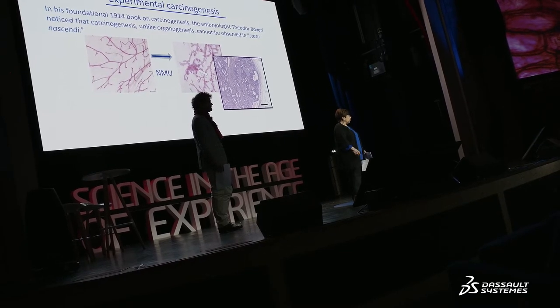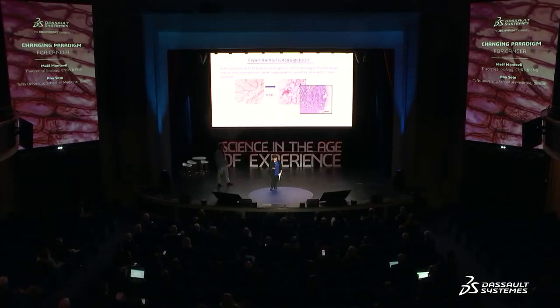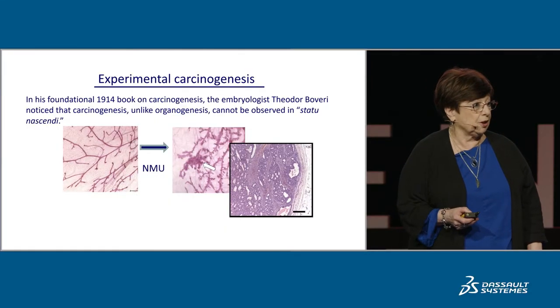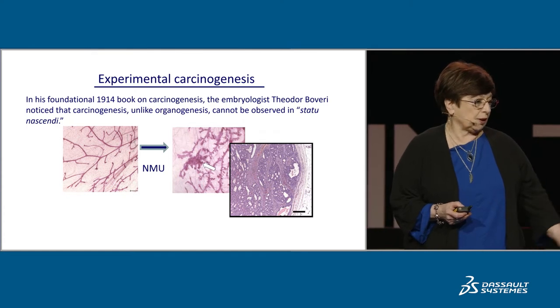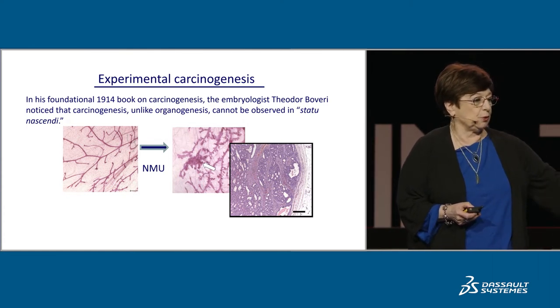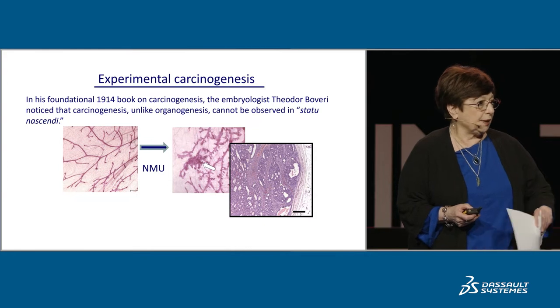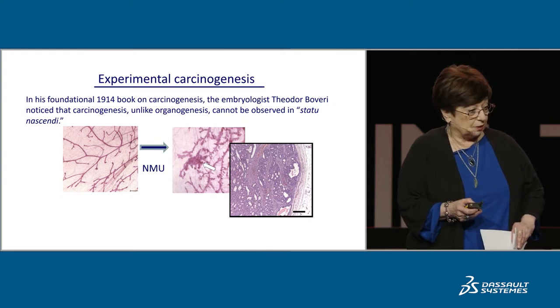I will start with the problem of cancer, because it's a very important health problem. In 1914, the embryologist Theodore Boveri noticed that carcinogenesis, unlike organogenesis, cannot be observed in statu nascendi. We don't see how it happens until it becomes visible — that is much, much later, say 20 years afterwards. Even using animal models like a mammary gland of a rat and a chemical carcinogen, we do not see it until 21 days or one month after we apply the chemical carcinogen.